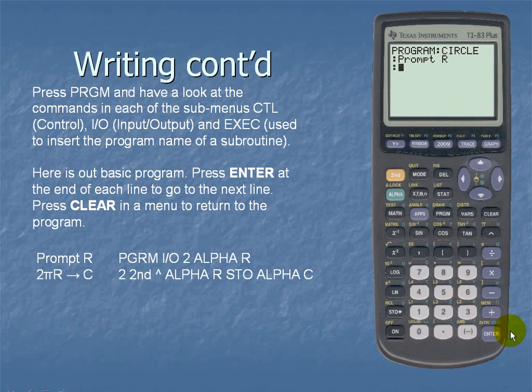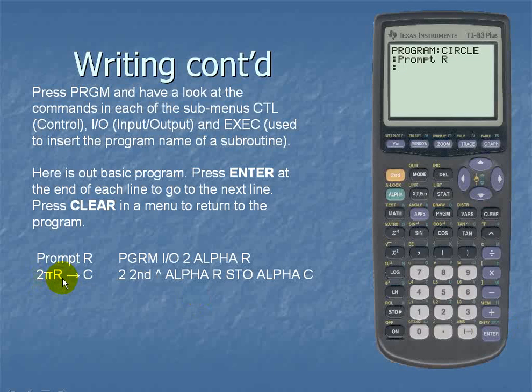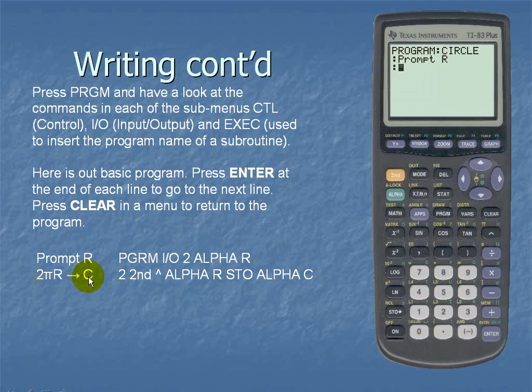The next thing that we want is the formula for the circumference of a circle which is 2 times pi times the radius. And we're going to store that for our value C. So we enter 2. Notice that pi is a yellow function so it's second in carat.